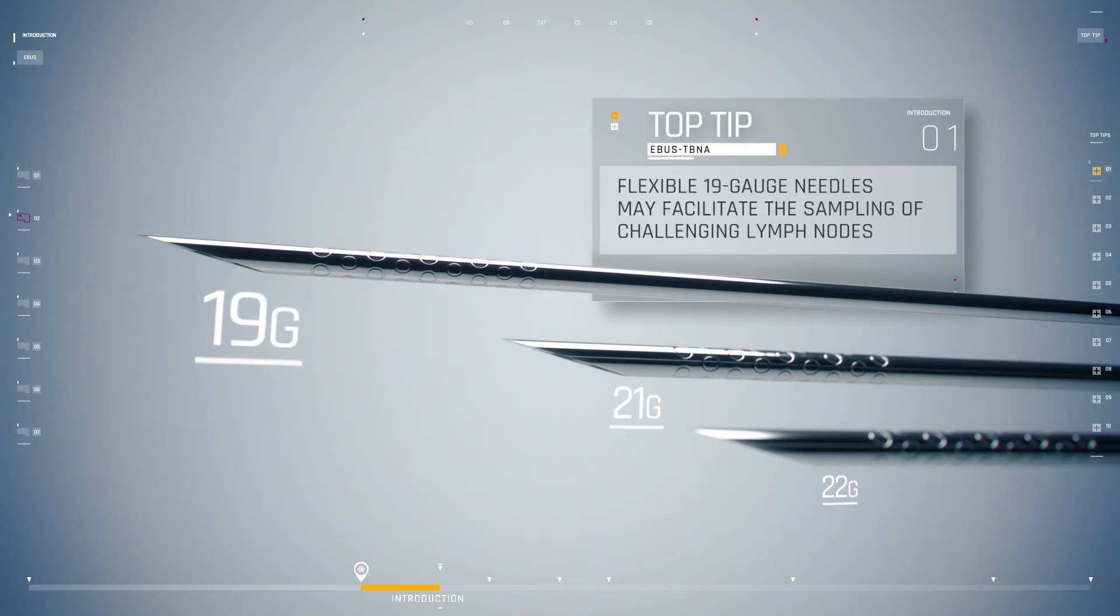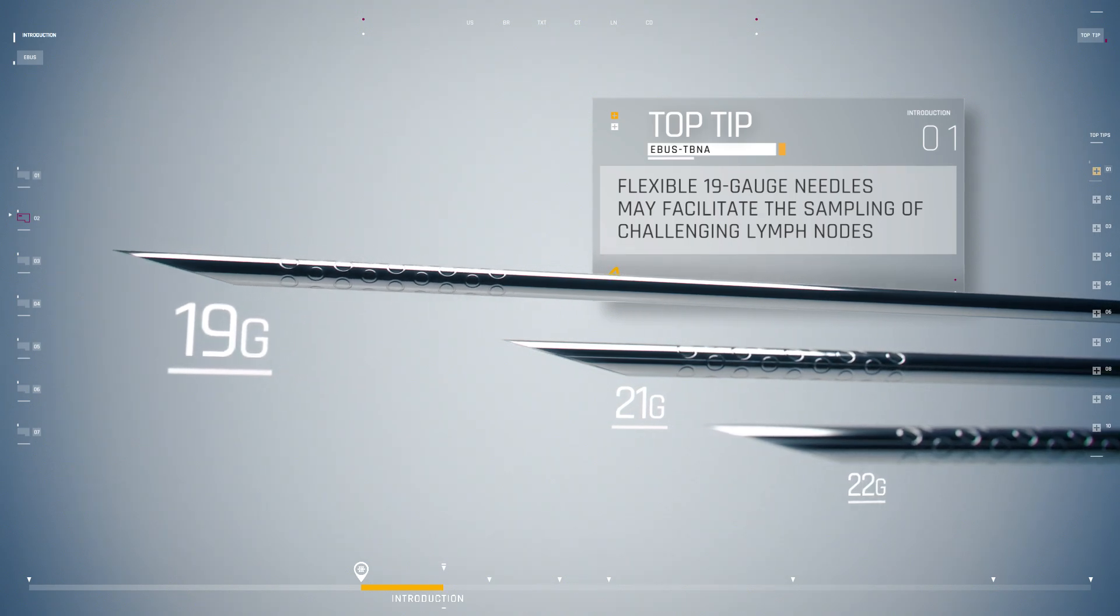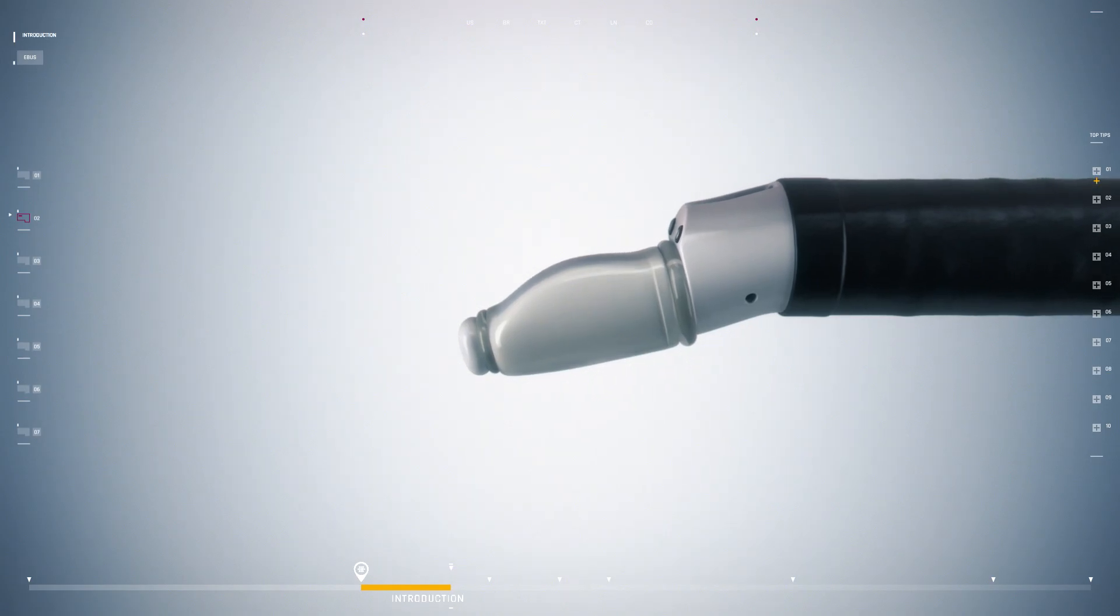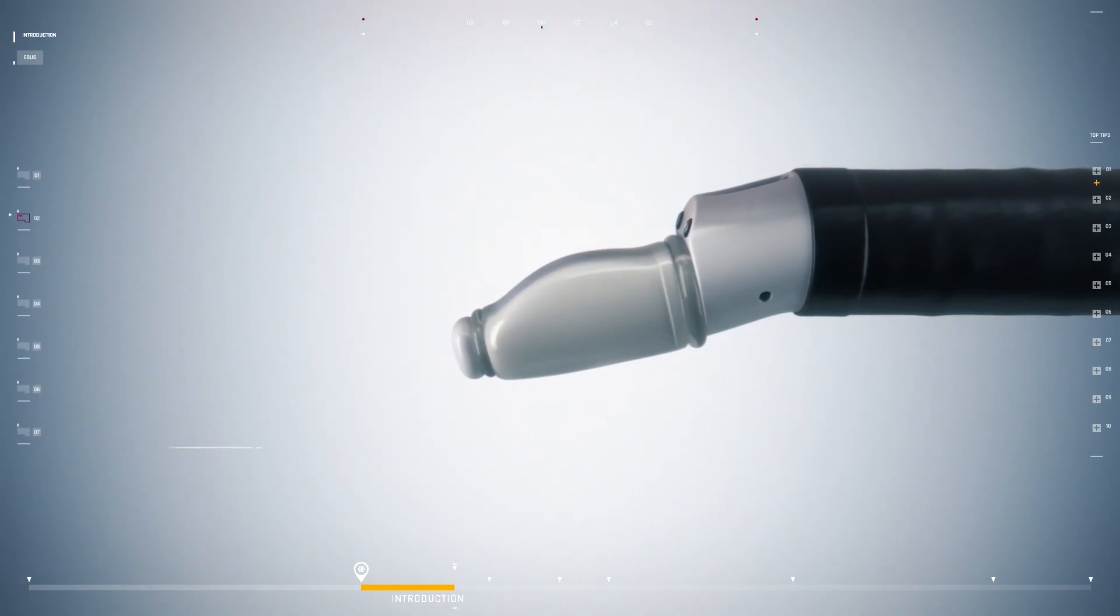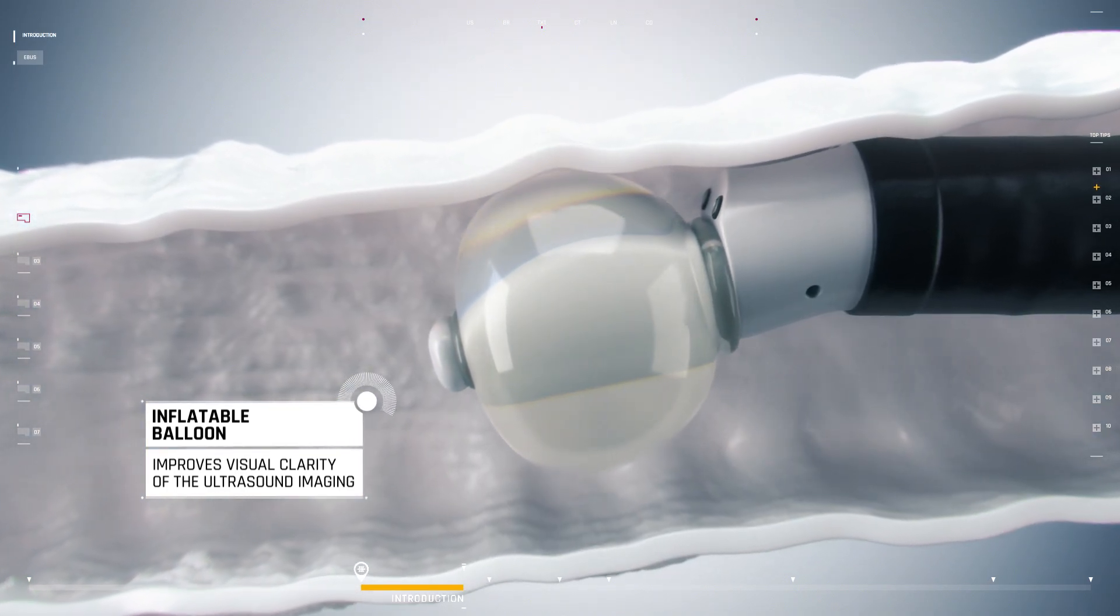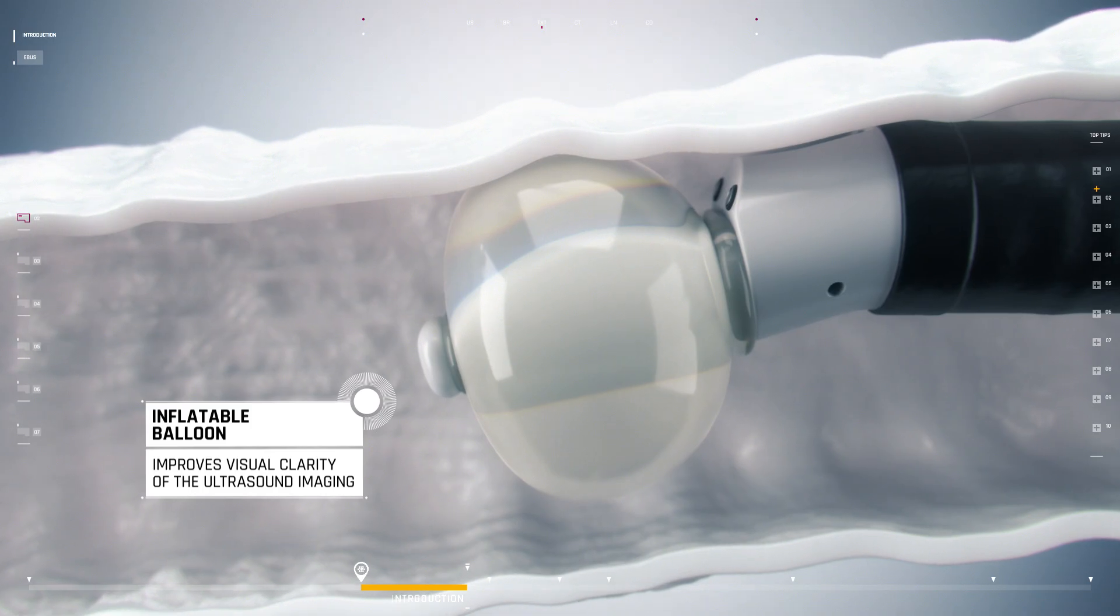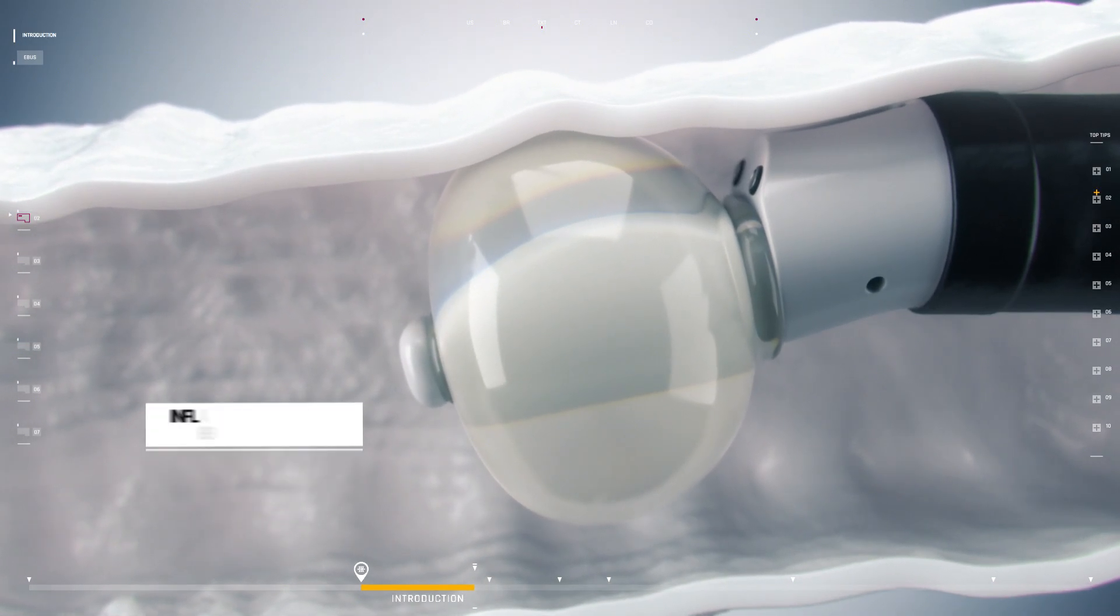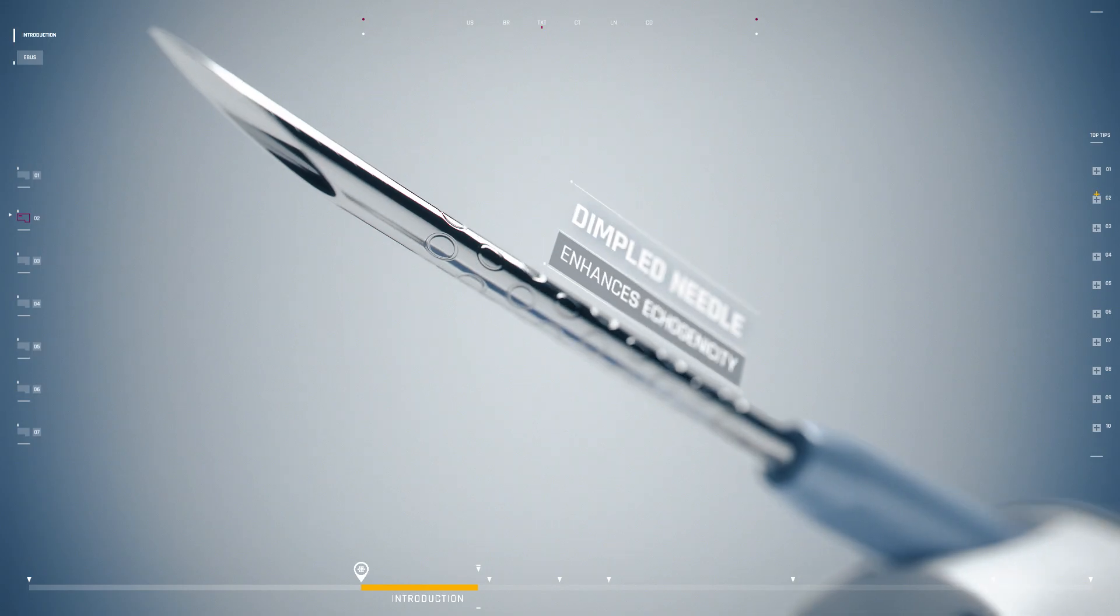The bronchoscope has specific features that improve visual clarity. A disposable balloon can be placed over the ultrasound transducer and may be filled with sterile water or saline to facilitate acoustic coupling between the airway mucosal surface and the probe. The needles have multiple small dimples on their shaft to enhance echogenicity and improve visualization on the screen.